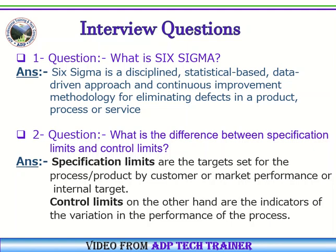Question Number 2: What is the difference between specification limits and control limits? Answer: Specification limits are the targets set for the process or product by the customer, market performance, or internal target. Control limits, on the other hand, are the indicators of the variation in the performance of the process.